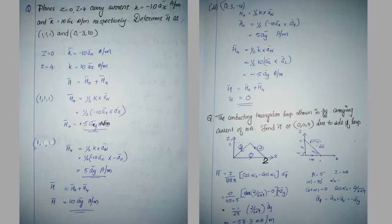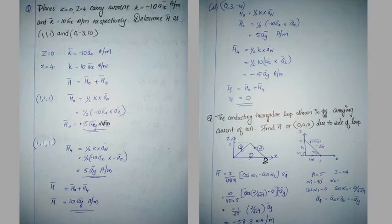The formula for a finite current line is H equal to I divided by 4 pi R times (cos alpha2 minus cos alpha1), times the unit vector. The current I is 10 amps. For this finite length from 0 to 2 along the x-axis, R is the perpendicular distance equal to 5, because that value equals the height.